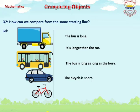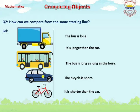The bicycle is short. Look at the picture — it is shorter than the other vehicles. The bicycle is shorter than the car. We compare the bicycle with the car and it is shorter than the car. As you see in the picture, we compare them very easily according to their lengths.